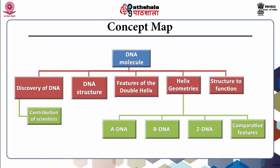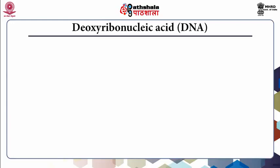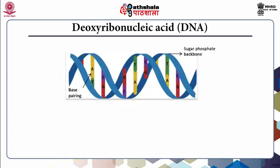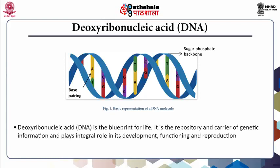In this slide, what you are going to see is DNA. The full form of DNA is deoxyribonucleic acid. What is shown in the figure is a typical representation of a DNA molecule. DNA is the blueprint for life — it is the repository and carrier of genetic information. It plays an integral role in development, functioning, physiological functions, and the reproductive part of a cell. DNA is mainly composed of a sugar-phosphate backbone, and these two chains of sugar-phosphate are linked to each other by base pairing.